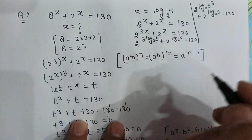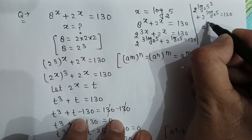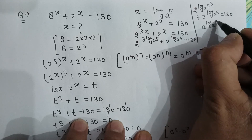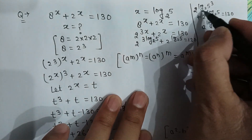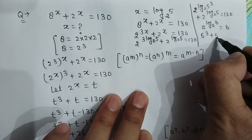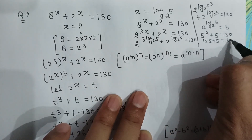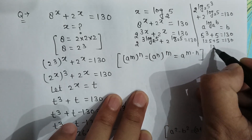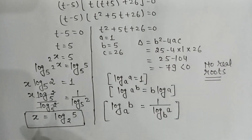Using the property that a to the power log base a of b equals b, we get 2 to the power log base 2 of 5 equals 5. So it becomes 5 to the power 3 plus 5 equals 130, which gives 125 plus 5 equals 130, and 130 equals 130. Our answer is correct: the value of x is log base 2 of 5.